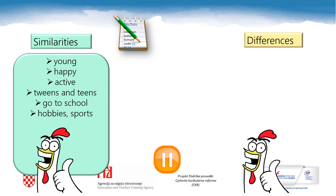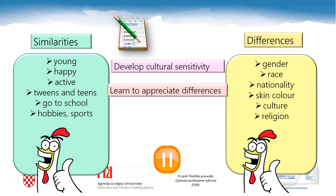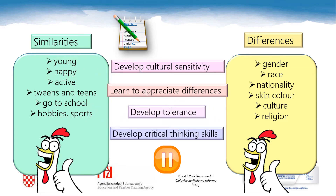I am sure we have come up with similar ideas. They are all young, happy, active, at about the same age. They go to school. They have probably similar hobbies and do similar sports. And what is different? Gender, race, nationality, skin colour, culture, and religion, probably. However, if we wish to embrace these differences, we need to develop cultural sensitivity, learn to appreciate the differences, develop tolerance and critical thinking skills.